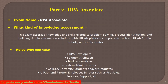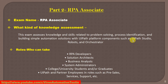The first exam covers knowledge and skills related to problem solving, process identification, and building simple automation solutions with UiPath platform components such as UiPath Studio, robots, and the Orchestrator. These are the three basic products of UiPath, and you should know the basics and have knowledge about UiPath Studio, robots, and Orchestrator for this RPA Associate online exam.